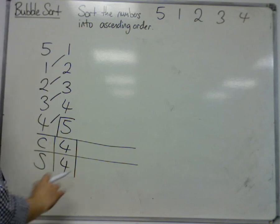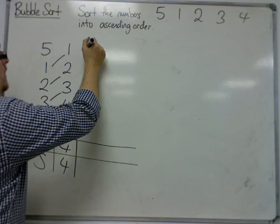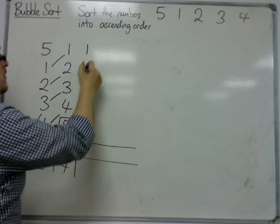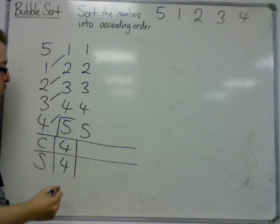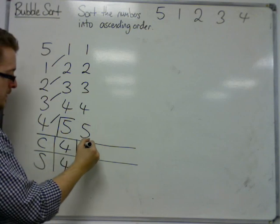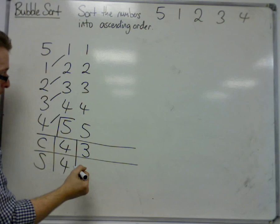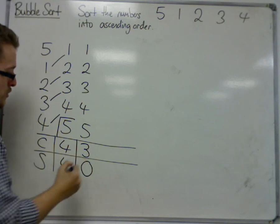Now, 1 and 2, they're in the correct order. 2 and 3 are in the correct order. 3 and 4 are in the correct order. So when there have been, well in this case there were 3 comparisons, and there were 0 swaps.